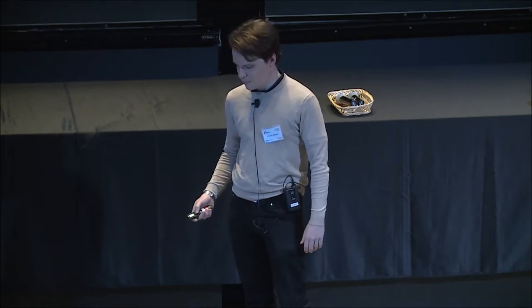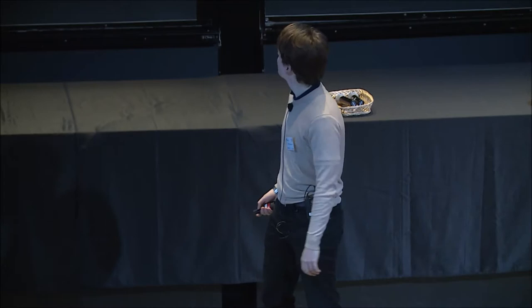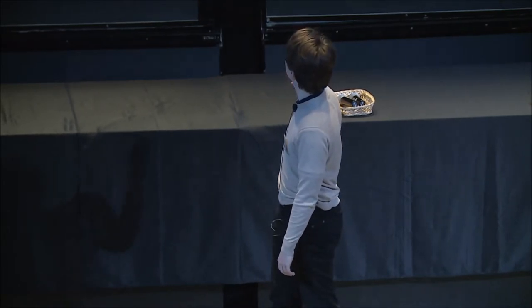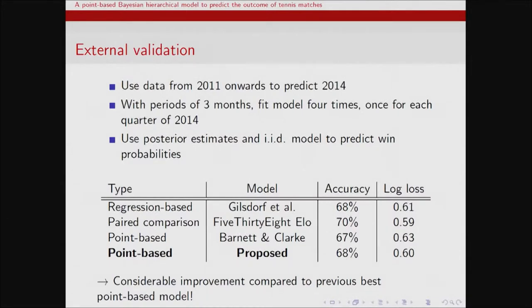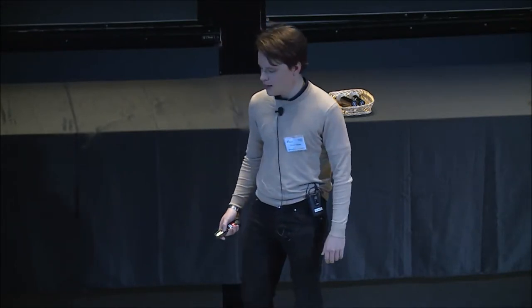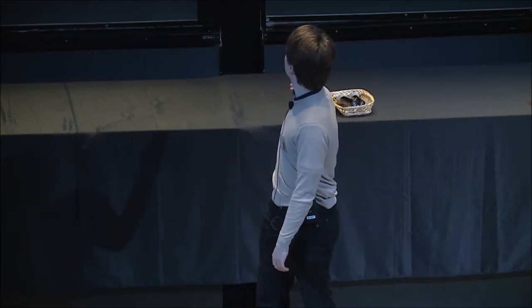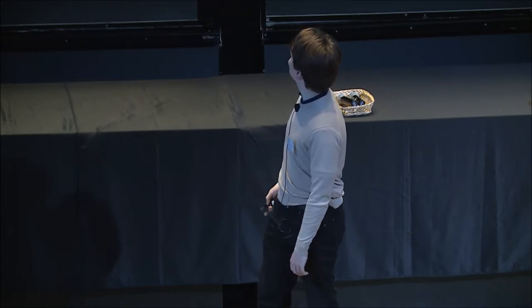How does this model perform? I used that comparison paper as a benchmark. I fit from 2011 onwards to predict 2014, taking periods of three months and predicting each quarter. This model actually performs quite a lot better than Barnett and Clark — 68% accuracy and a log loss of 0.6. It's not quite as good as Elo, but it's definitely a lot better than the previous point-based model. These point-based models are so much more expressive — you can calculate a lot more things. At the point level, the proposed model also beats Barnett and Clark by a fair margin on RMSE and R-squared.